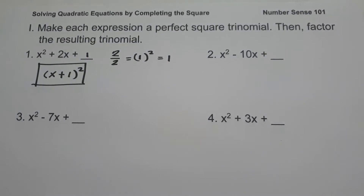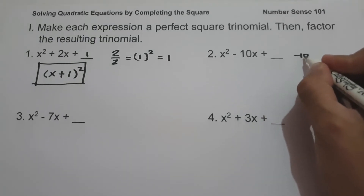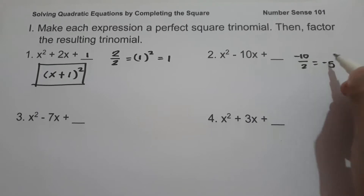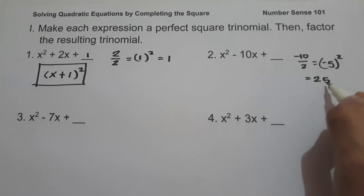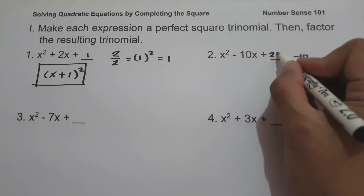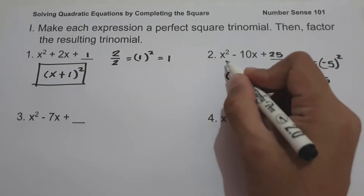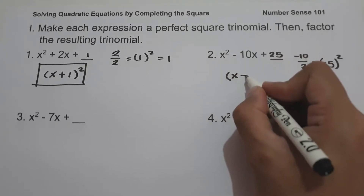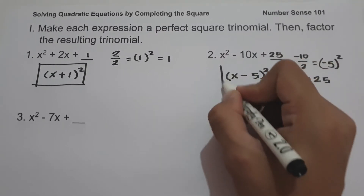On number 2, we have x squared minus 10x plus blank. So the middle term is negative 10. Let us divide by 2, and that is negative 5. Negative 5 squared is 25. So we're going to add 25 to make this expression a perfect square trinomial. To factor this, the square root of x squared is x, the sign of the middle term is negative, the square root of 25 is 5, and then square. And this will be our answer.